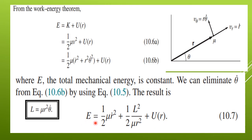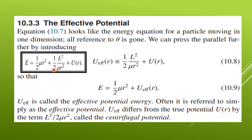This equation is similar to the total energy of a particle moving in one dimension. We treat the two terms collectively as the effective potential energy: U_eff(r) = L²/(2 mu r²) + u(r). So the total energy becomes E = half mu r-dot² + U_eff. U_eff is called the effective potential energy or effective potential. The term L²/(2 mu r²) is called the centrifugal potential, which absorbs the theta dependence, while u(r) is called the true potential.